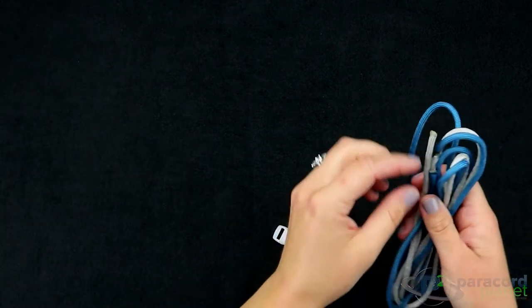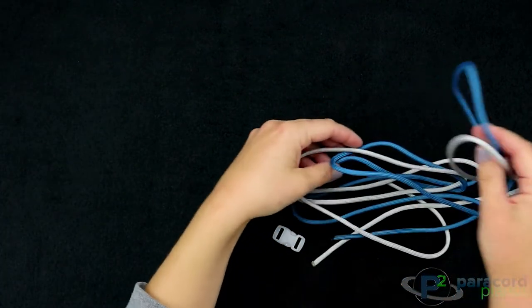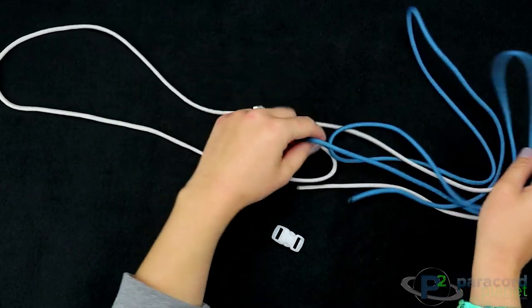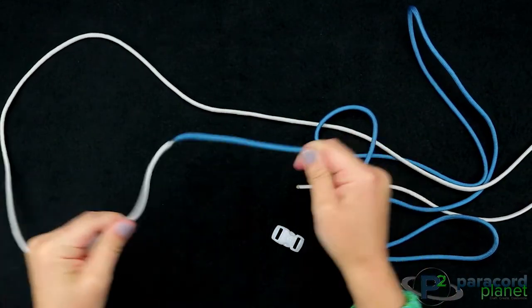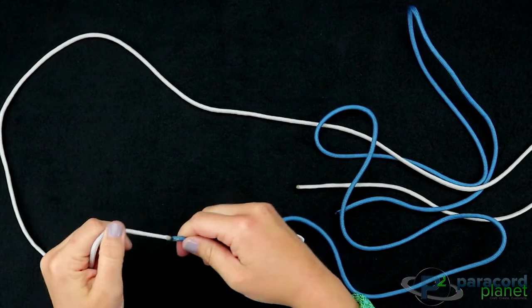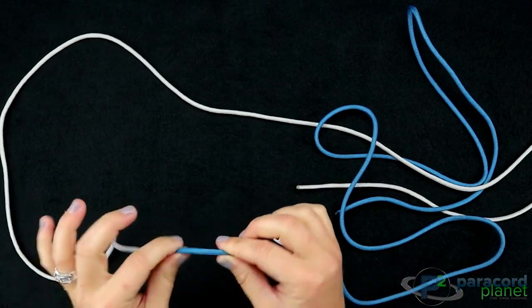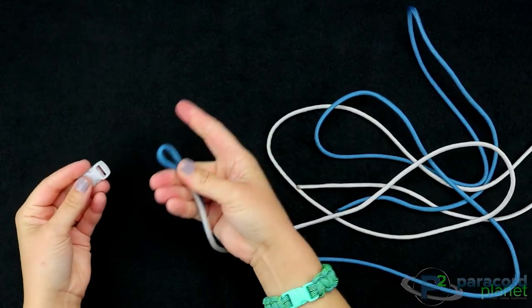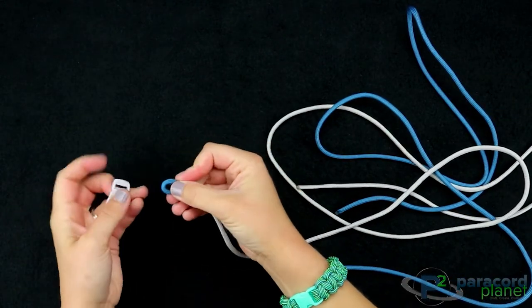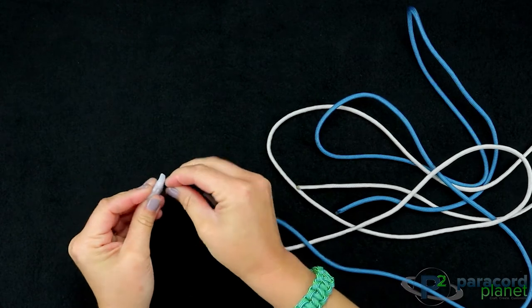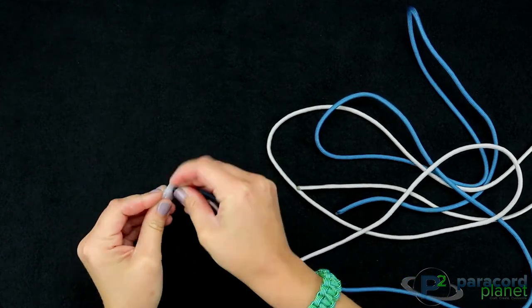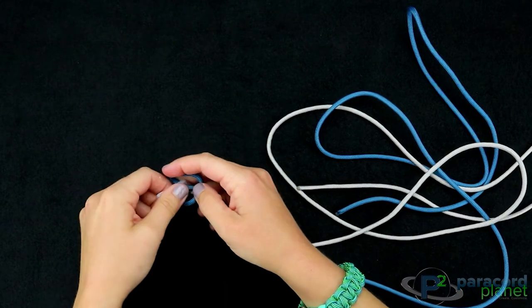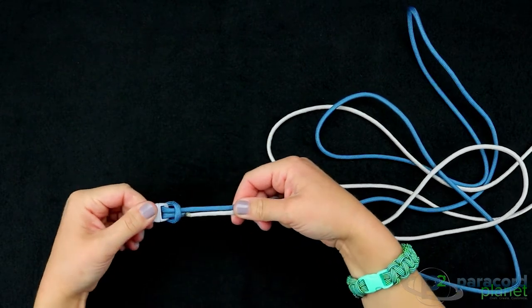The first thing that you'll want to do is weld your paracord together. If you haven't done that yet you'll want to do that now. Since this is about the halfway point of your bracelet, fold it over, put it through the top of the buckle and loop it over the top, forming a cow's hitch, and pull tight.